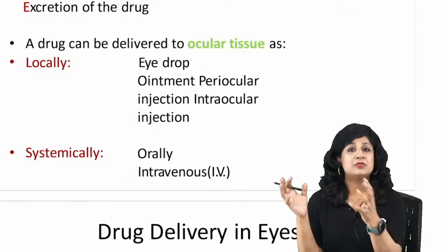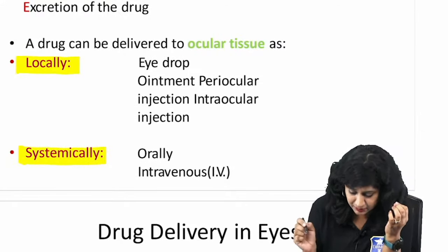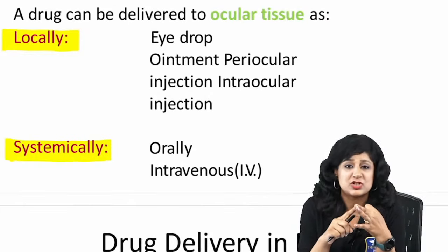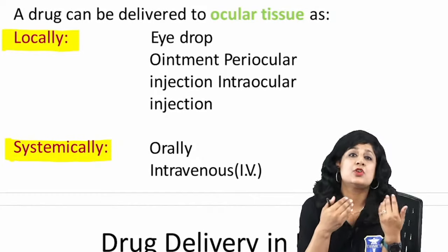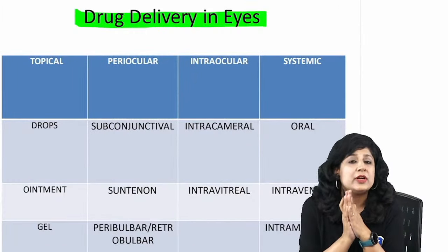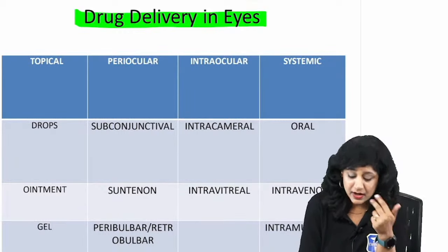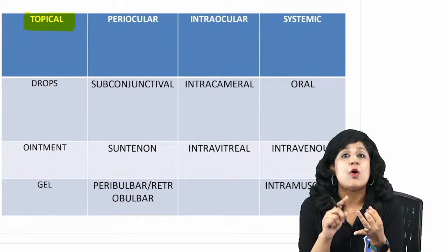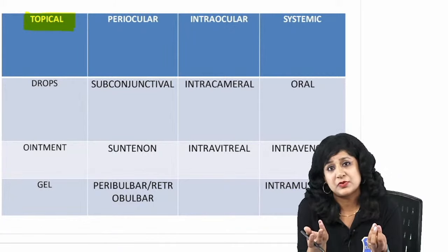A drug can be delivered to the ocular tissue either locally or systemically. Locally, we have eye drops, ointments, and injections — periocular, intravitreal, and intracameral. Systemically, the drug can be given orally or intravenously. One important practical question that appeared in AIIMS: if a drop and an ointment are both prescribed, what order should the nurse follow? The answer is drops first, then ointment.